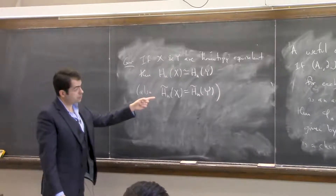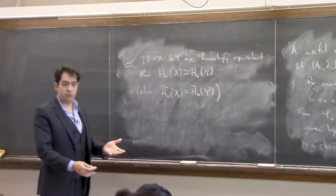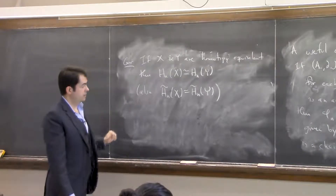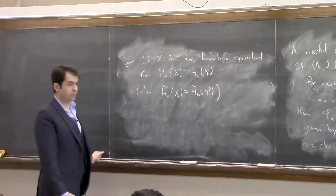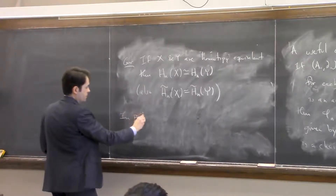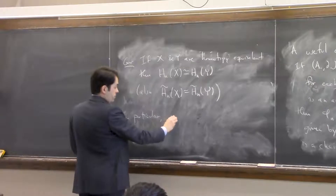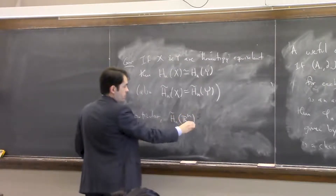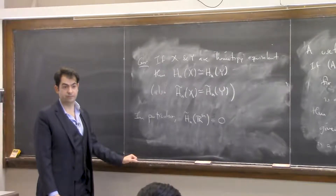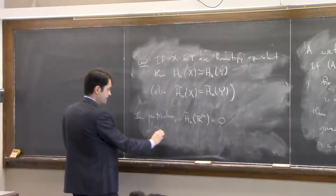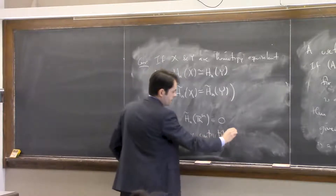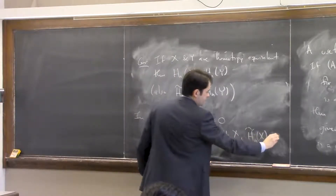A map of spaces also gives a map between the augmented chain complexes and hence a map between reduced homology groups. In particular, for R^m the reduced homology is trivial, since it's the same as the reduced homology of a point. More generally, for any contractible X, the reduced homology is zero.